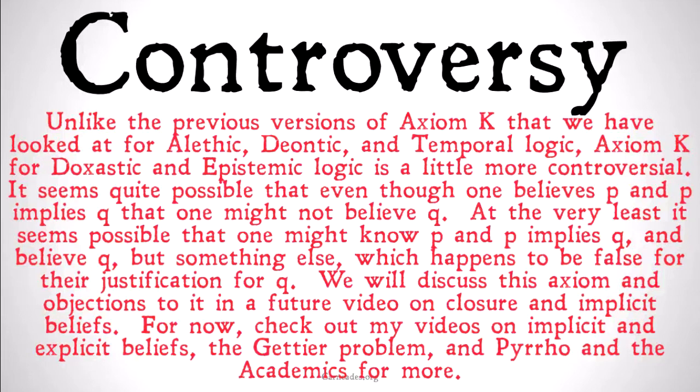Basically, they might know that P and know that P implies Q, but not conclude Q because of P and P implies Q — rather, conclude Q because of some other piece of evidence, and completely not even notice that they both know P and P implies Q.